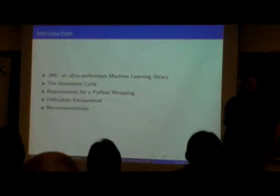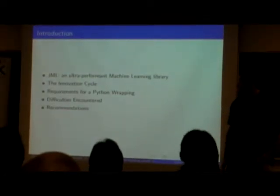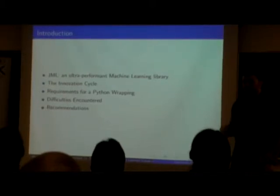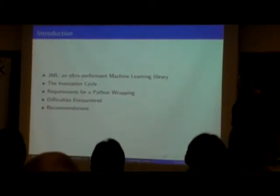So what is it? JML is a really high-performing machine learning library. I'm going to talk about the innovation cycle, which is how I use that to be really effective in solving machine learning problems.